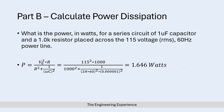For part b we calculate the power for a series RC circuit with a 1 microfarad capacitor and 1 kilo ohm resistor placed across a 115 volt RMS, 60 hertz power line. Using the derived equation and plugging in the numbers: V equals 115 V squared, R equals 1 kilo ohm for both the numerator R and the denominator R squared, and omega equals 2πf with f equals 60 hertz. This gives an output of 1.646 watts, which matches exactly what we found in the simulation.